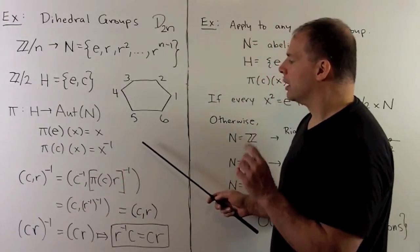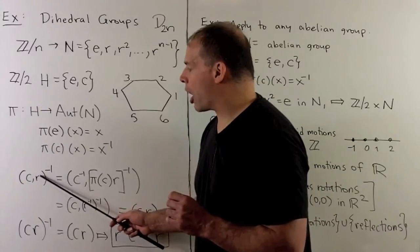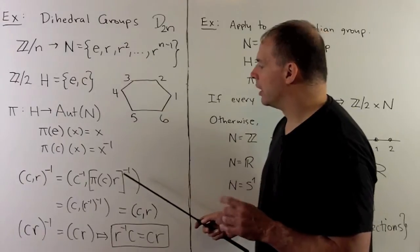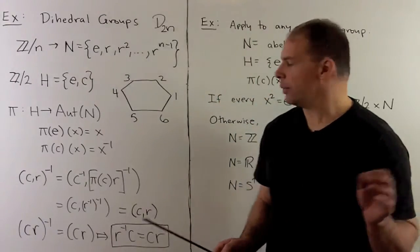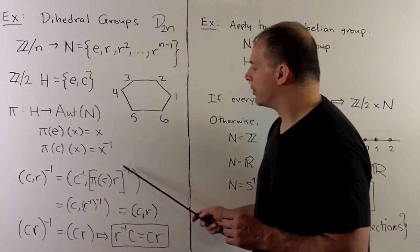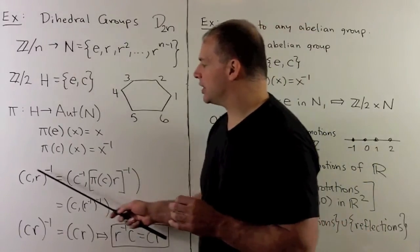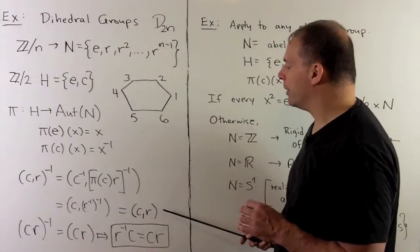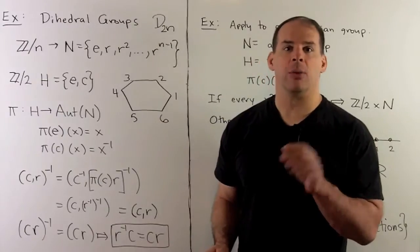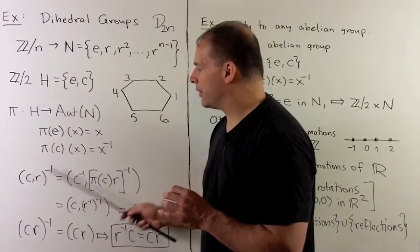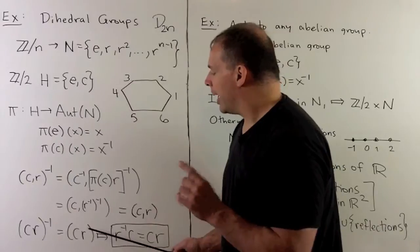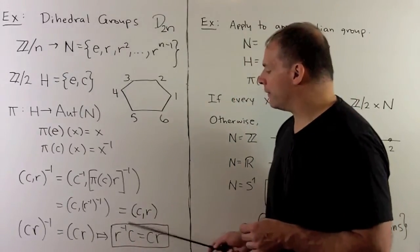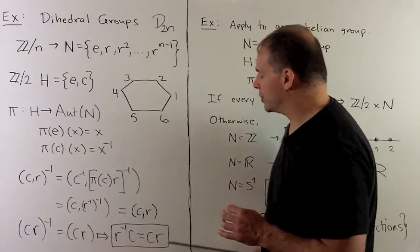It's straightforward to check that this is a homomorphism. Let's see what the inverse of (C, R) is. By our rule, we get (C inverse, pi(C) applied to R, take the inverse). Now C inverse equals C because C has order 2. Pi(C) on R is equal to R inverse, so we have R inverse inverse, which is just R. So (C, R) inverse equals (C, R), meaning (C, R) squared is the identity. Erasing the parentheses and comma, that's just saying CR is a reflection, which we know. This also says CR inverse equals CR, and rewriting using the rule for the inverse of a product gives R inverse C equals CR — one of the defining relations for the dihedral group.